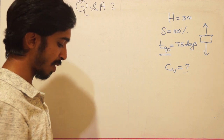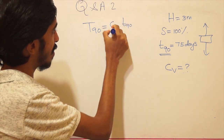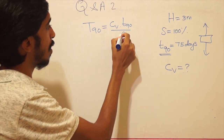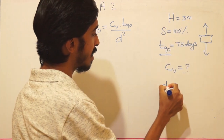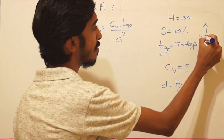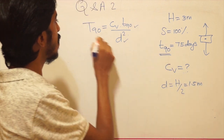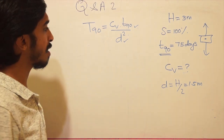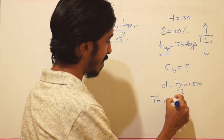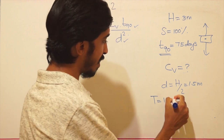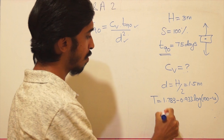We know that the time factor T90 = cv × t90 / d². To find the drainage path d: since the height is 3 meters and drainage is both ways, d = 1.5 meters. The only unknown is T90, which we find from Terzaghi's one-dimensional theory using the equation: T = 1.781 − 0.933 × log(100 − U%) for U > 60%.